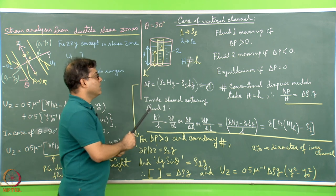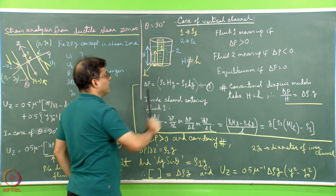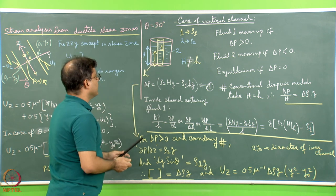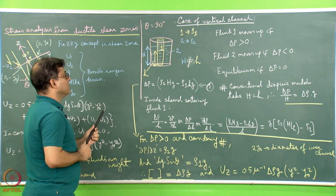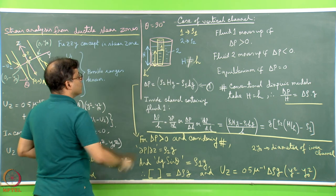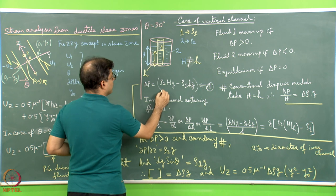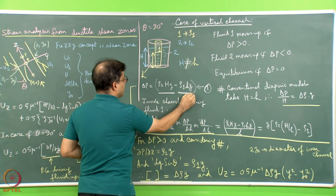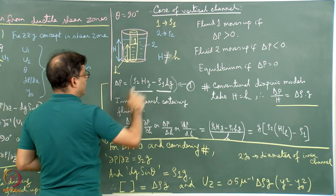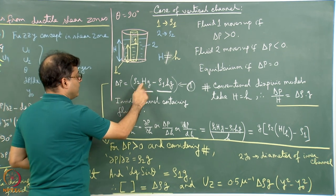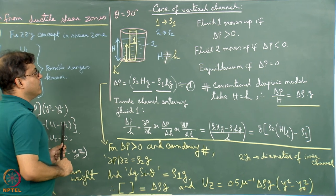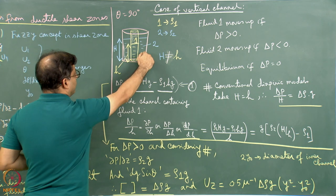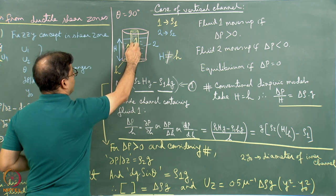They can also be the vice versa case. Generally, capital H and small h are not equal. The pressure difference created at the base will be given by such an expression. Fluid 1 has density rho 1 and fluid 2 has density rho 2. Fluid 2 exerts pressure rho2 × H × g, and fluid 1 exerts pressure rho1 × h × g. The pressure difference delta P is one minus the other. Fluid 1 will move up if delta P is more than 0 — fluid 2 will push inside channel 1 and fluid 1 will move upward.